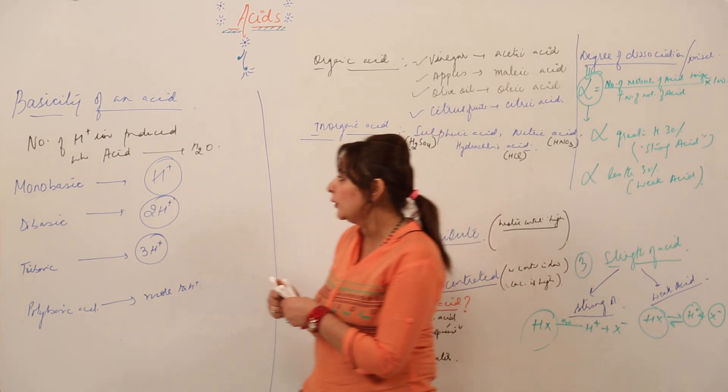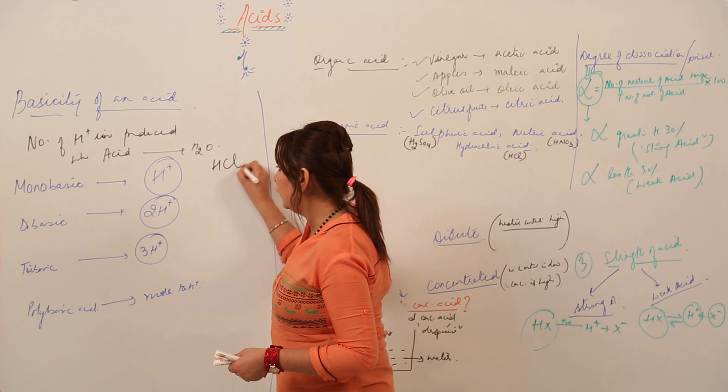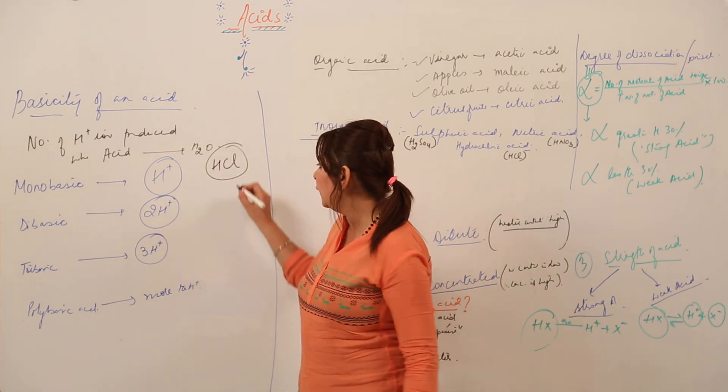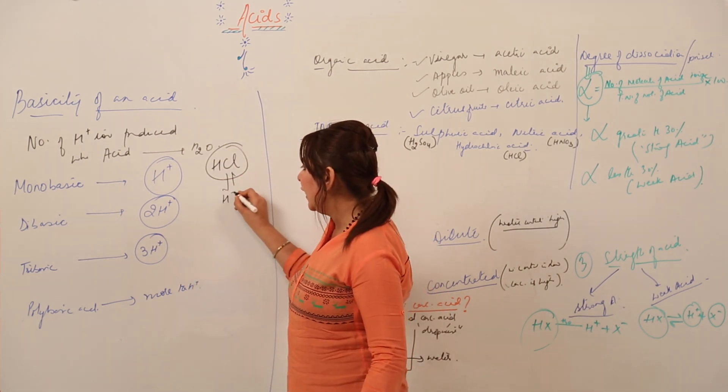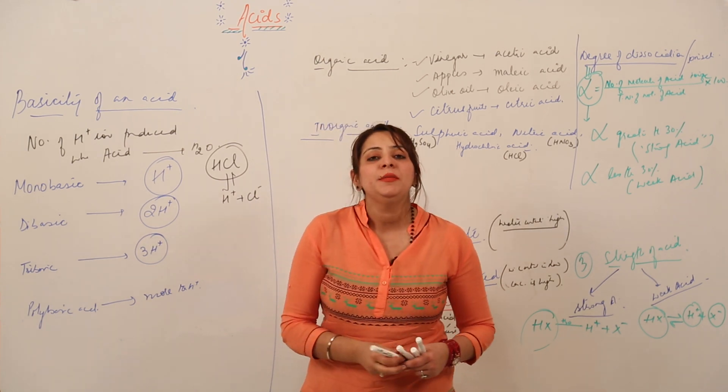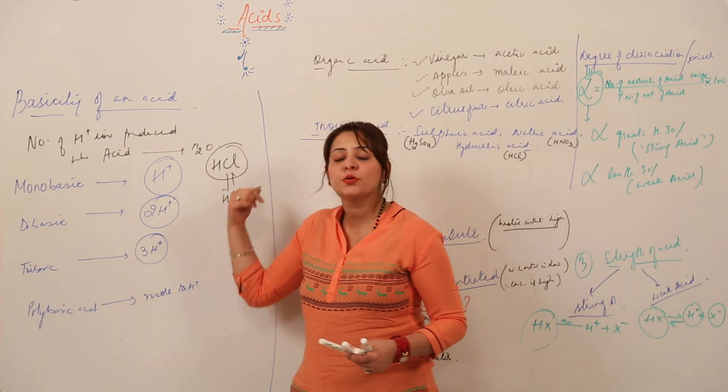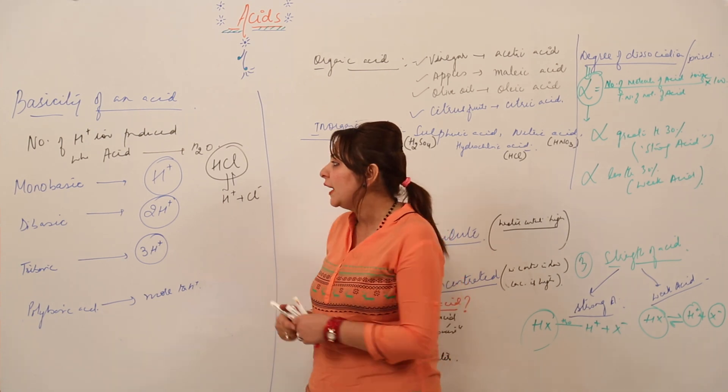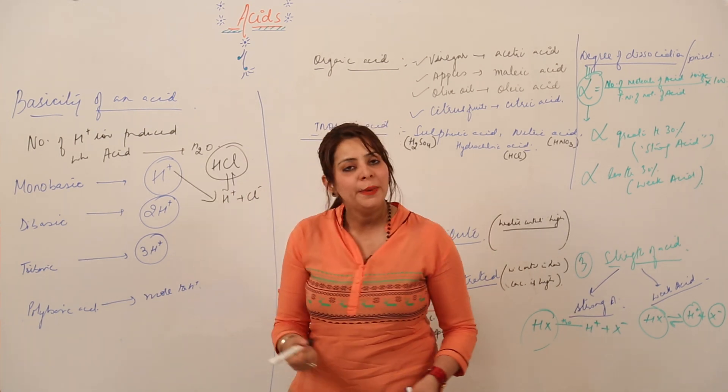Yes, just look at the board. We have HCl. When I dissolve this HCl in water, what do I get? I get one H+ ion and one Cl-. So that means this HCl is going to produce one H+ ion, so it is an example of monobasic.